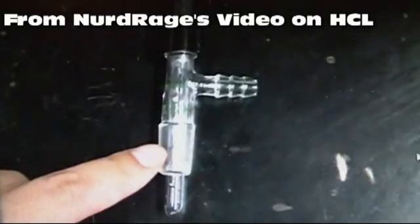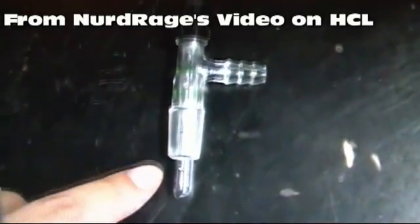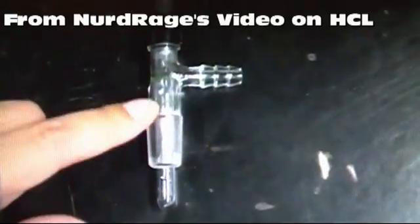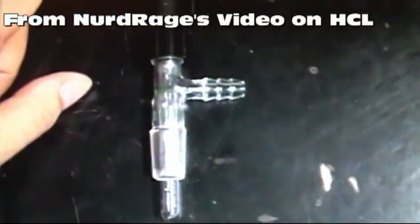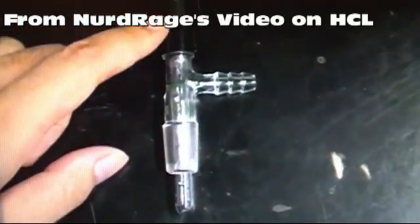Hello everyone. In one of NerdRage's videos, he uses a backflow preventer to keep his newly made hydrochloric acid solution from being sucked back into the reaction flask due to the high solubility of HCl and the pressure change from a cooling reaction flask.